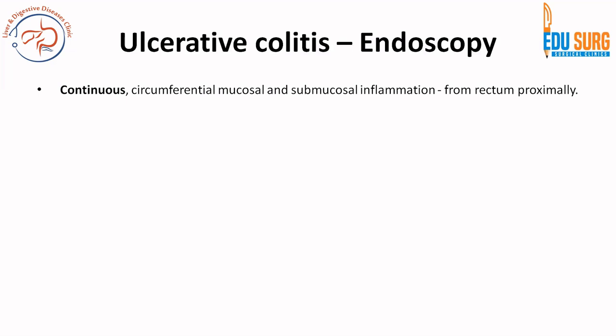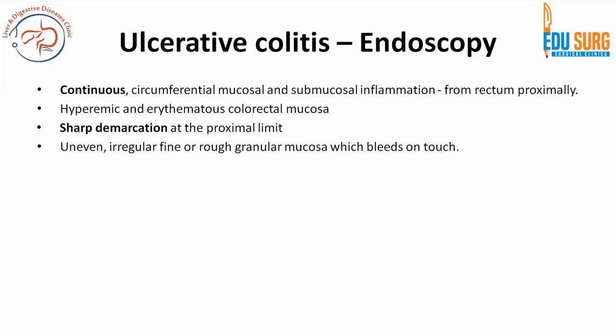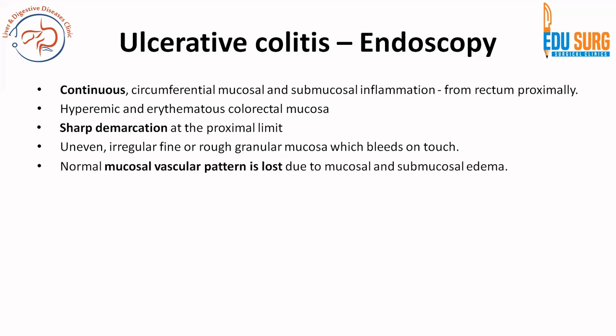In ulcerative colitis, the classic endoscopic feature is that the disease extends from the rectum proximally with continuous and circumferential mucosal and submucosal inflammation. This is the classic description you will see on an endoscopy report. The colorectal mucosa is hyperemic and erythematous. There will be a sharp demarcation at the proximal limit — this is important and commonly asked. The mucosa is uneven, irregular, granular, and bleeds on touch. The normal mucosal vascular pattern is lost, and if ulcers are present, they are superficial surrounded by inflamed mucosa.